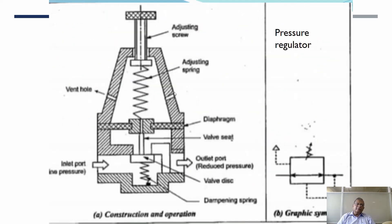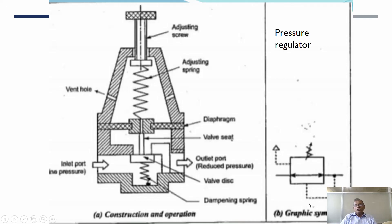Here you can see the pressure regulator. By adjusting the screw — either turning clockwise or counterclockwise — you can either increase or decrease the pressure, or set the pressure to the desired value. The regulator has various components: a diaphragm, valve seat, valve, inlet port, and outlet port. You can regulate the pressure by varying the spring pressure. This is the graphical symbol of the pressure regulator.